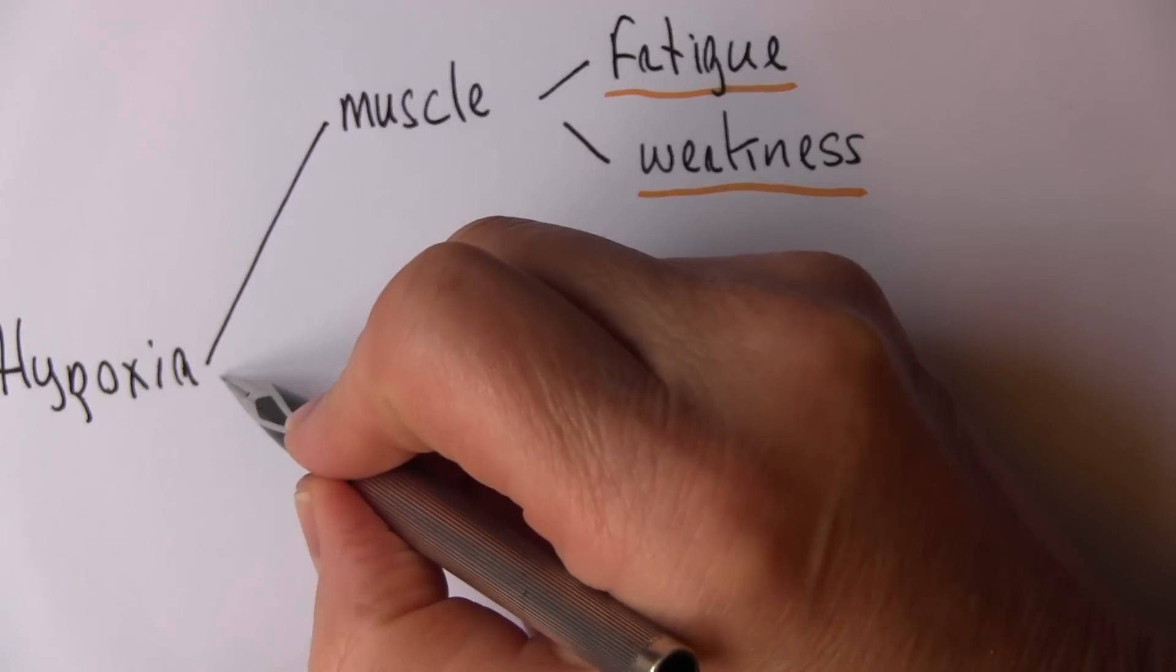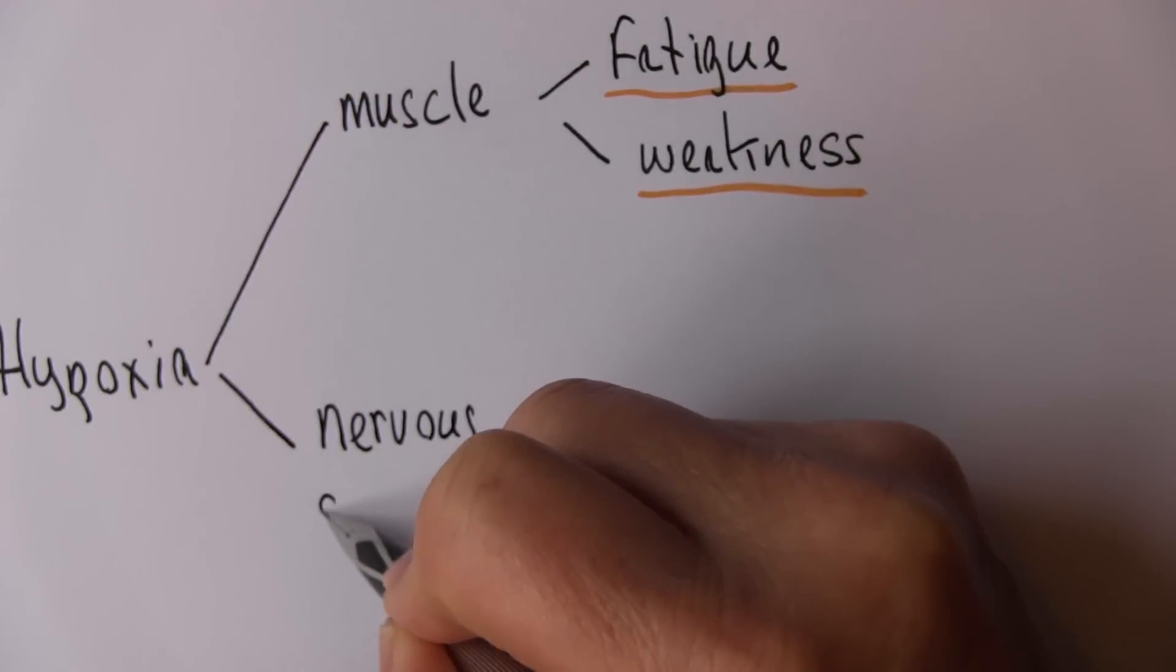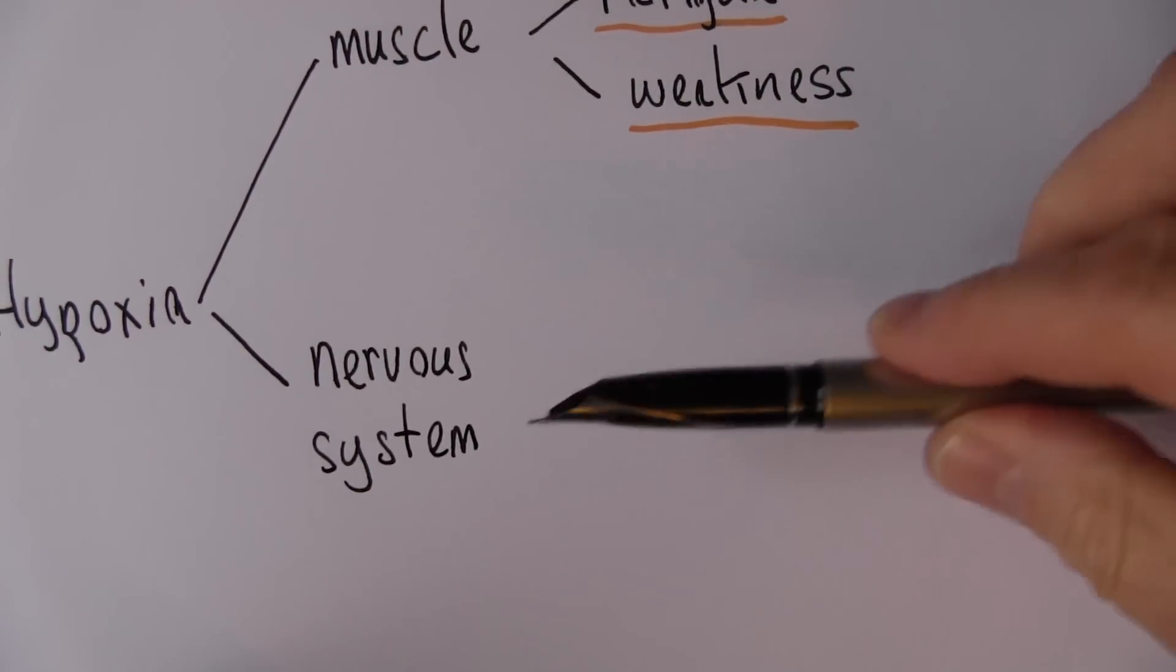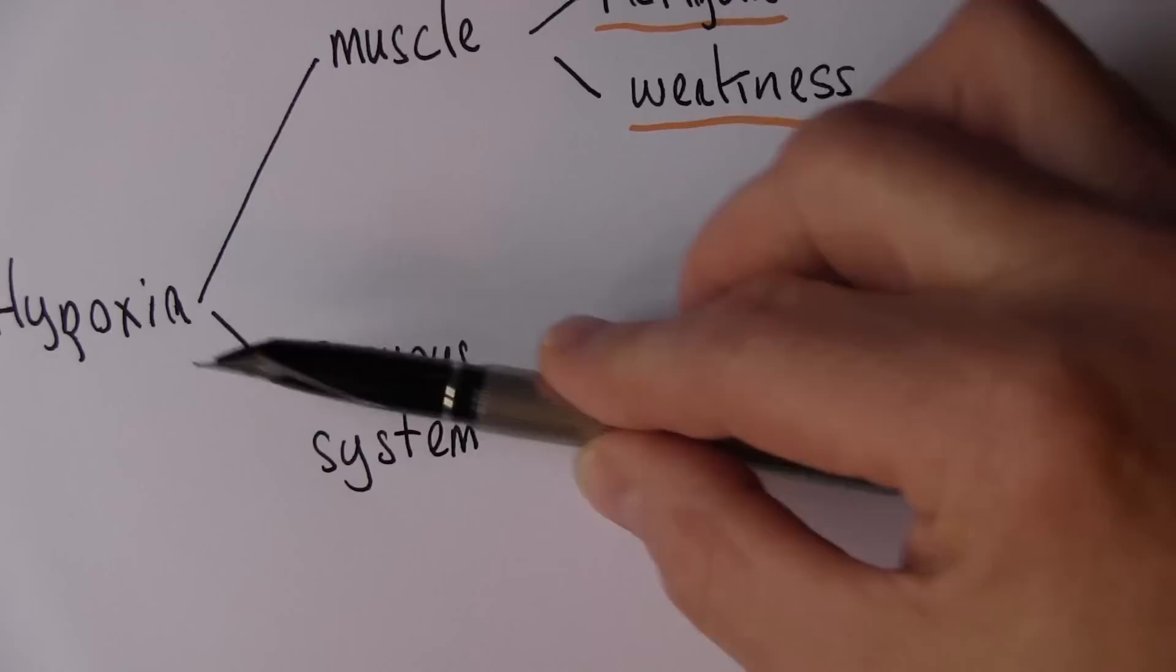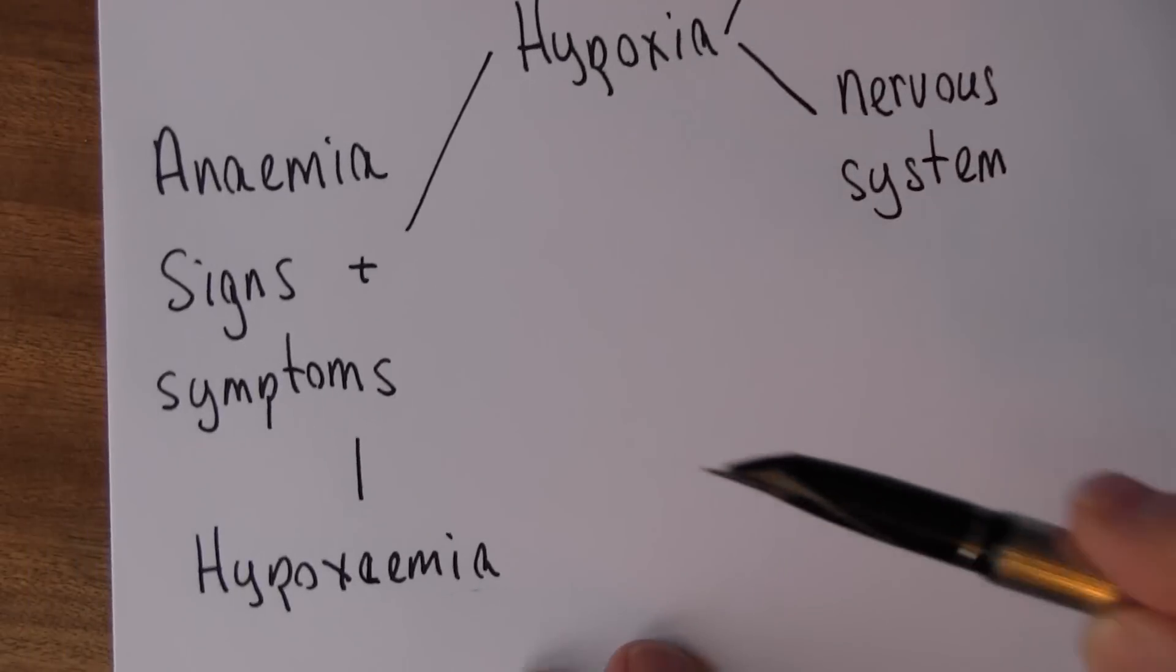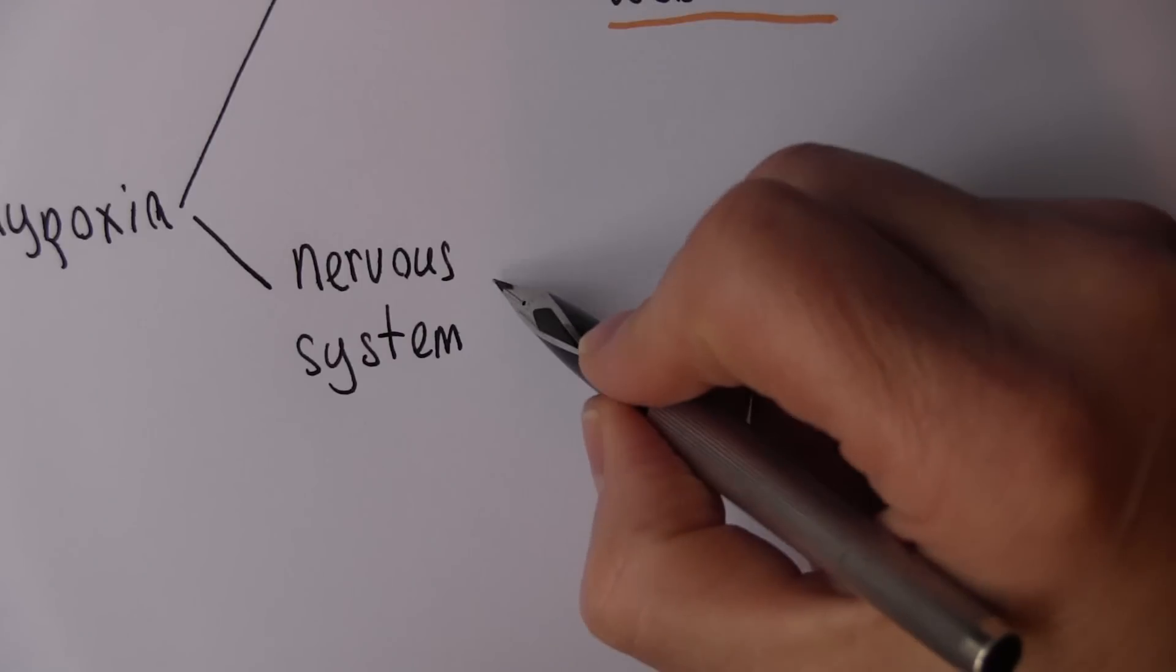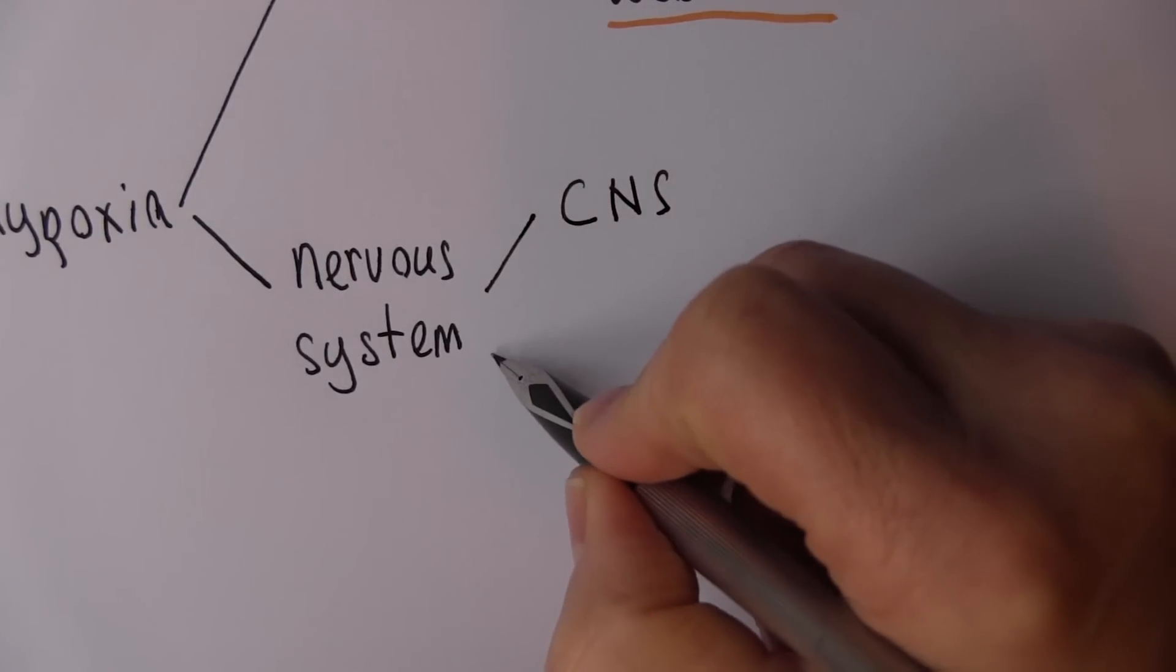Now another tissue that becomes hypoxic is the nervous system. Again, the nervous system uses a lot of energy. It has very high metabolic demand, both in the central nervous system and in the peripheral nervous system. So how will the hypoxia caused by the anemia affect the nervous system? We can divide the nervous system of course into the central nervous system and the peripheral nervous system.